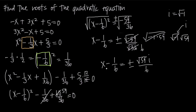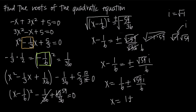After all that simplification, we end up with x minus 1 sixth is equal to positive or negative square root of 59 times i, all divided by 6. In order to solve for x, we add 1 sixth to both sides so the negative 1 sixth cancels on the left. So we get x is equal to 1 sixth plus or minus root 59 i over 6. Because we have a common denominator, we can combine these fractions and get x is equal to 1 plus or minus square root of 59 times i, all over 6.